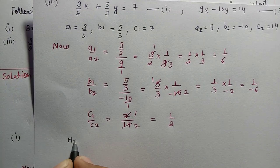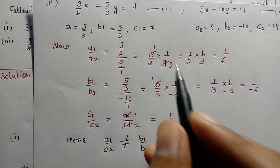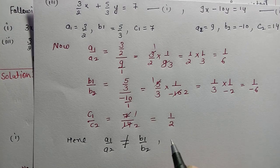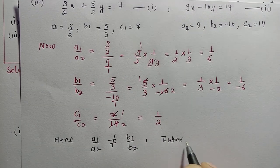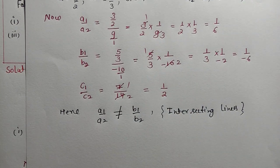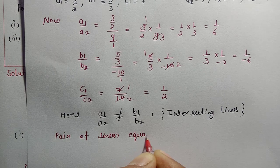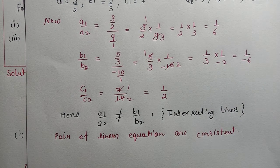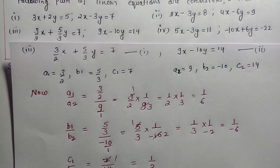So A1/A2 = 1/6 and B1/B2 = -1/6; both are not equal. This satisfies the first condition — intersecting lines. So these are intersecting lines, meaning a unique solution exists and the pair is consistent.